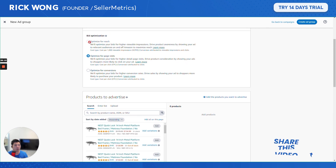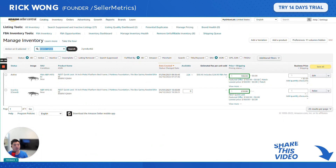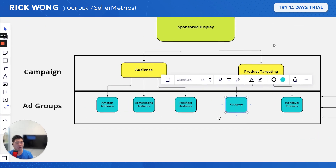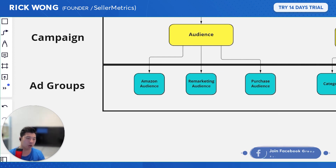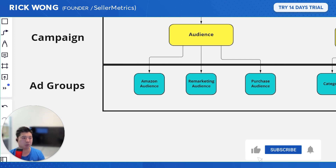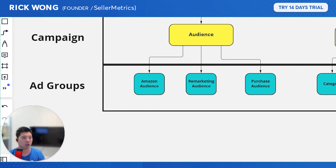That's the setup for sponsored display product targeting. Feel free to subscribe and be notified for Part 2, where I'll cover how to set up a sponsored display audience campaign in the best structure for scaling. My name is Rick Long, founder of Seller Metrics — Amazon PPC software that optimizes and scales your Amazon PPC campaigns. Best of luck and happy selling!